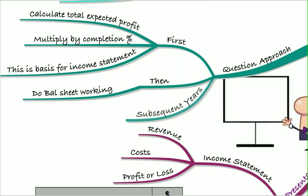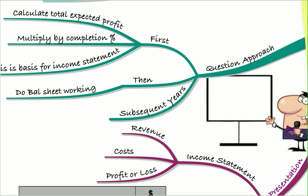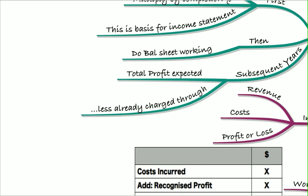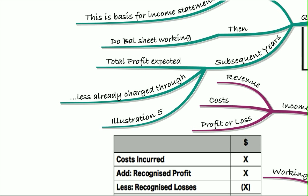Remember that in subsequent years, we're calculating the total profit expected. If we've calculated the total profit expected over the contract, we need to subtract out any amounts we've already charged through as profit in previous years. So we looked at that in detail in illustration five.